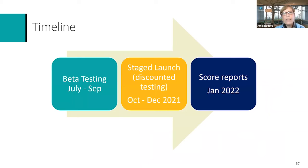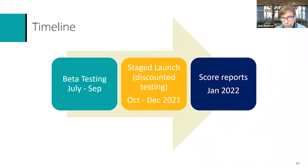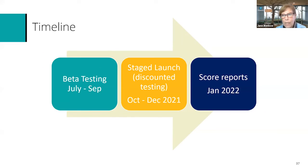Here's our timeline. We've been in beta testing since July with about 200 test takers so far giving us feedback, and we've been learning a lot. Our staged launch begins in October, and you can buy the test at that point at a discounted price, which will vary by country and location. Candidates will be able to take the test starting in October, but score reports won't be issued until January. That has a lot to do with the equivalence exercises we're doing between paper and computer-based tests, as well as standard setting for passing cut scores — which takes quite some time to ensure it's an equivalent experience for our candidates.